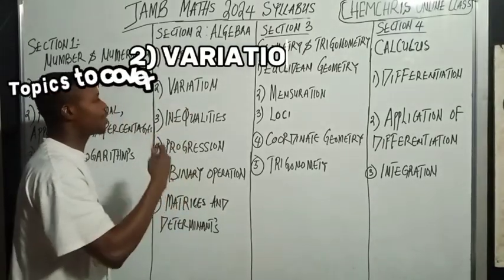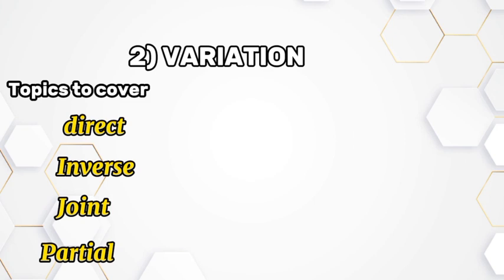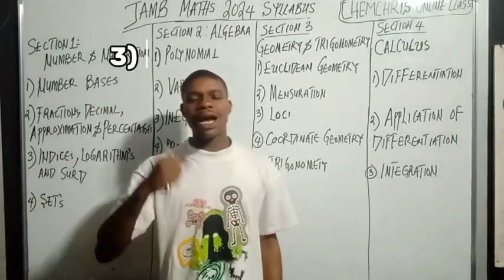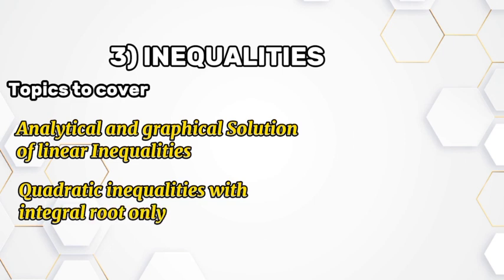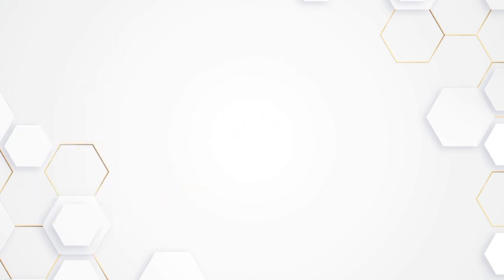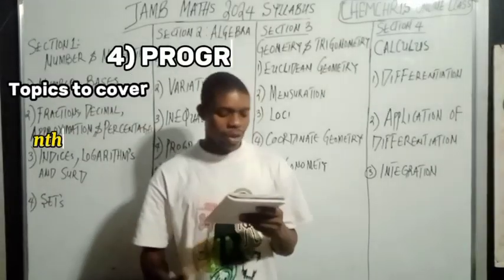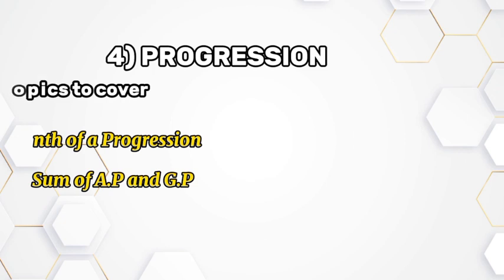Number two is variation. The topics in variation are: direct variation, inverse variation, joint variation, partial variation, and percentage increase and decrease. Number three is inequalities. The topics are: analytical and graphical solution of linear inequalities, and quadratic inequalities with integral roots only. For progression, the topics are: the nth term of a progression, and the sum of AP and GP.